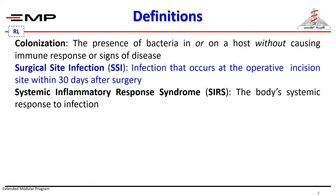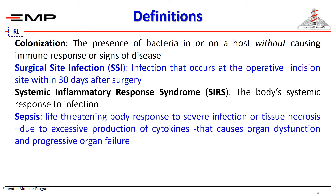The invasion of microorganisms through tissues following breakdown of local and systemic defenses will lead to local and systemic clinical manifestations. The local manifestations of wound infection are discussed later. However, the systemic response of the body is called systemic inflammatory response syndrome, or SIRS. SIRS is a life-threatening body response to severe infection or tissue necrosis due to excessive production of cytokines that causes organ dysfunction and progressive organ failure.